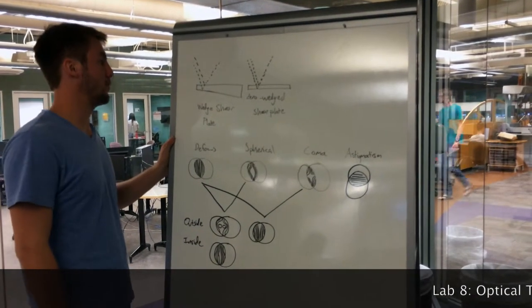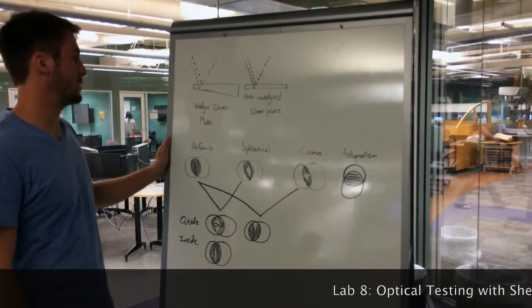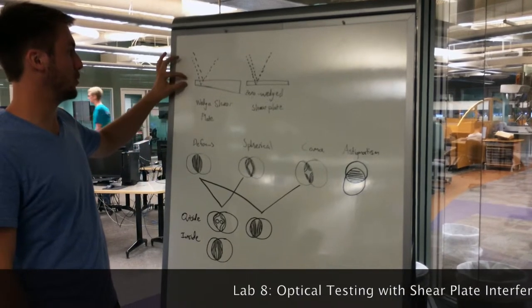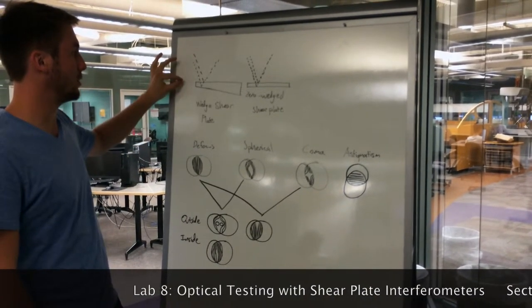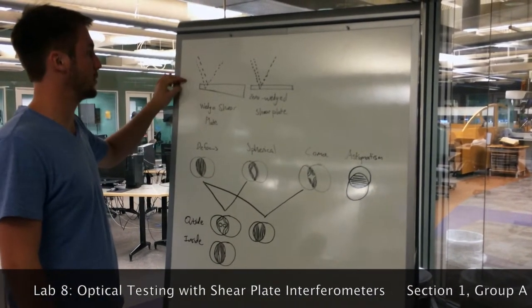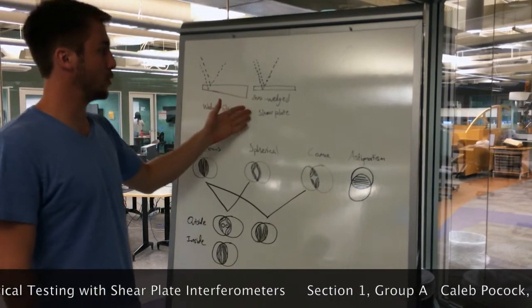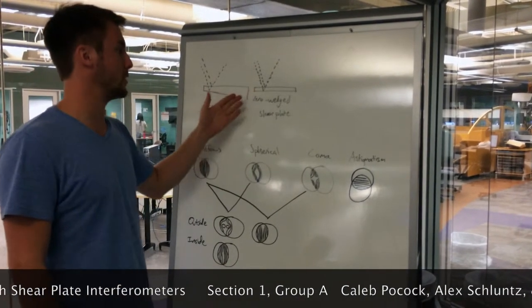In this lab we're looking at interferometry done with shear plates. The first example is a wedge shear plate where the plate has an angle between the first surface and the second surface. The zero wedge shear plate has no angle between the two surfaces.